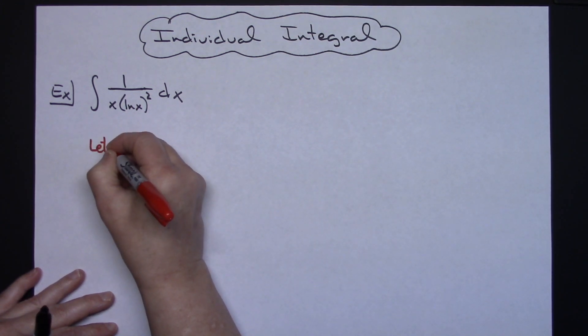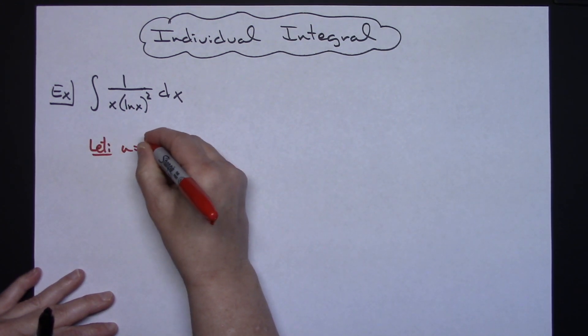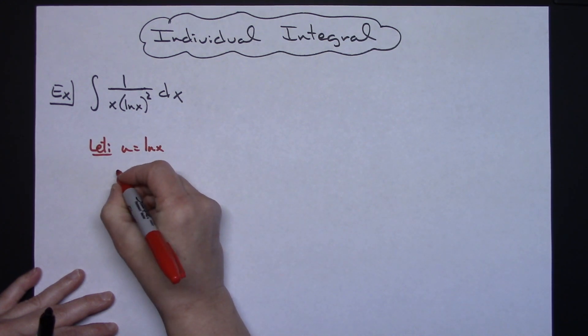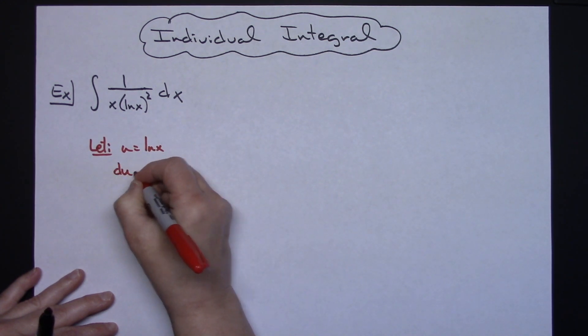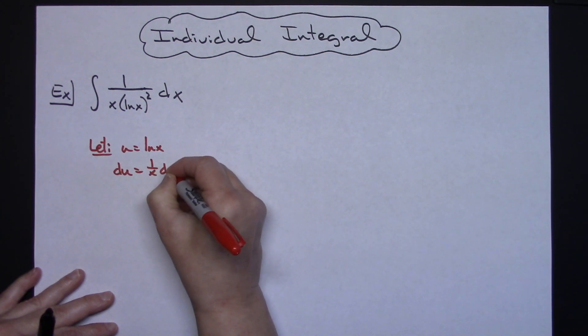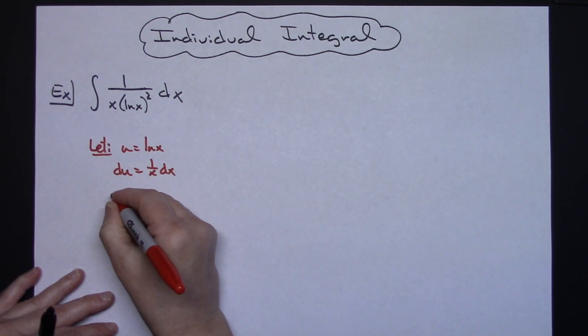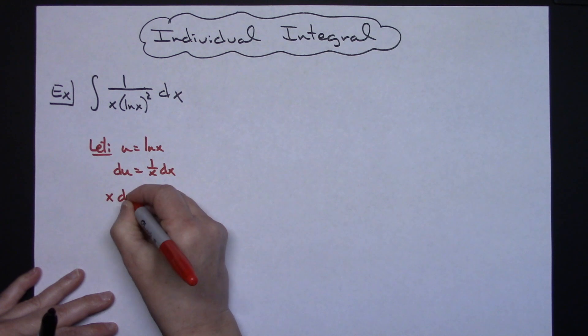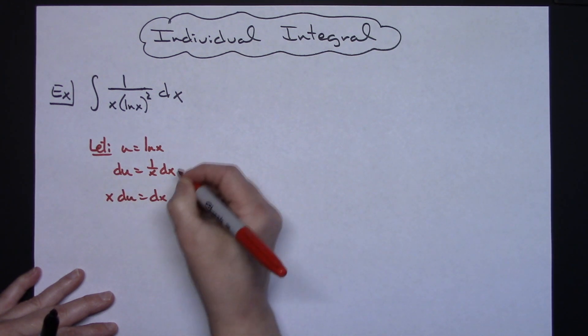So I'm going to let u equal natural log of x. I take the derivative of both sides. I'll have du is equal to 1 over x dx. I'll go ahead and solve all the way down for dx, so then I will have x du is equal to dx.